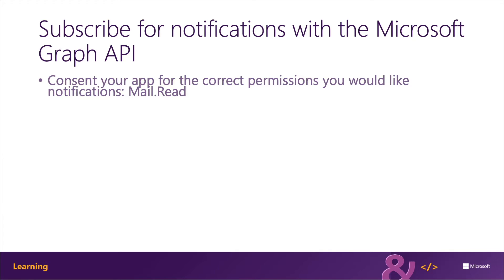The app needs the permissions required to do the query in order to return a dataset that will be used in the change notification. For example, if you want to be notified when new emails are received, your app needs the mail.read permission.